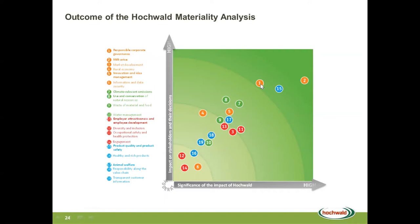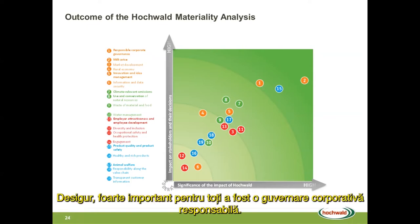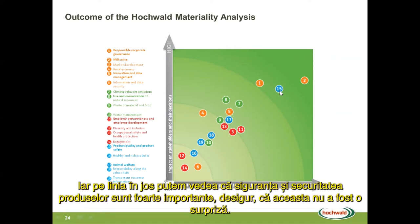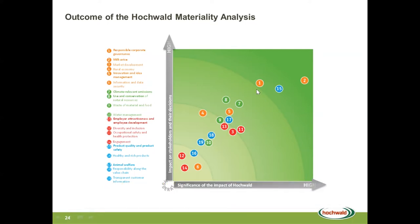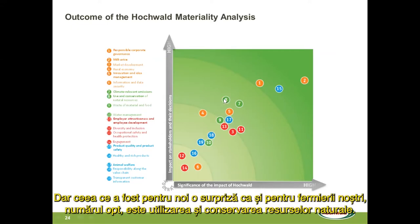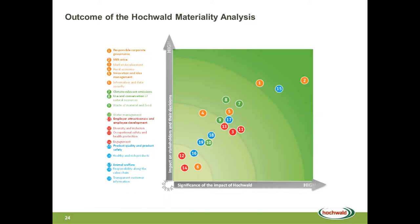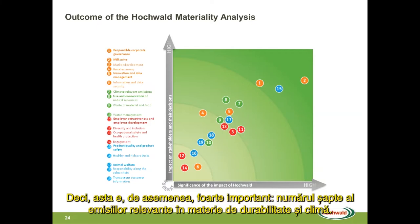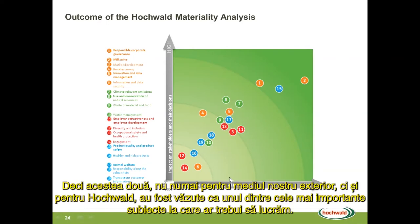Of course, responsible corporate governance was also very important for all. Going down the line, product safety and security is very important — that was not much of a surprise. But what was a surprise is that also within Hochwald, with our farmers, number eight is the use and conservation of natural resources, and sustainability and climate-relevant emissions is number seven. So these two are seen as among the most important subjects we should work on, not only by our external stakeholders but also internally.